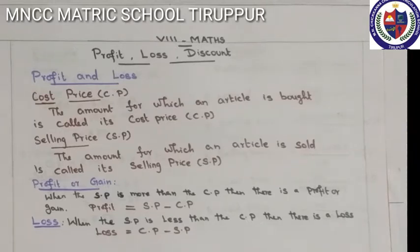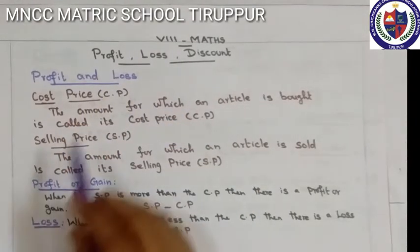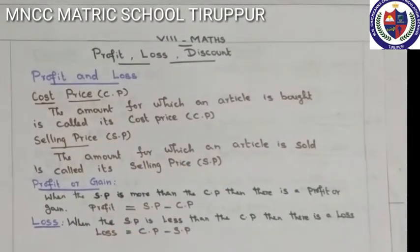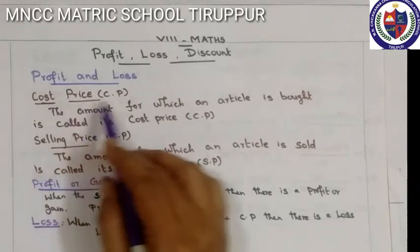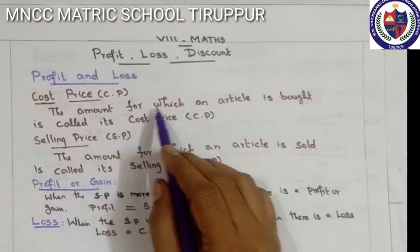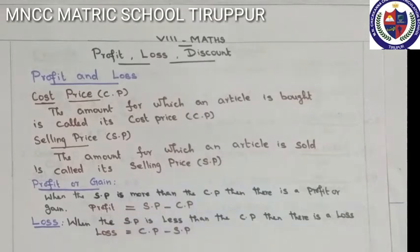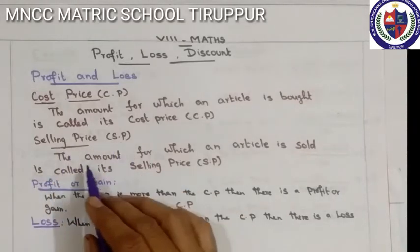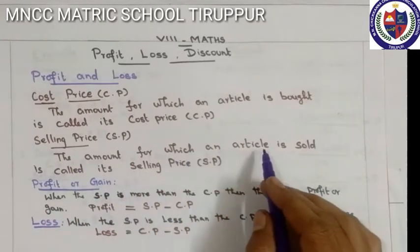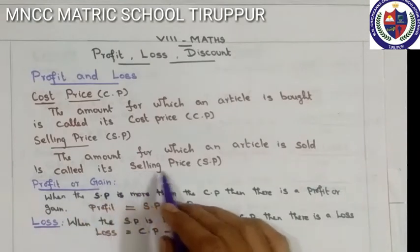The first topic is Profit, Loss and Discount. First, we see Cost Price. Cost Price means the amount for which an article is bought is called Cost Price. Selling Price means the amount for which an article is sold is called Selling Price.